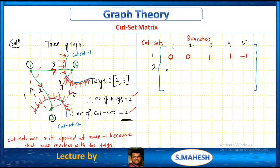Cut set 2, branch 1 — branch 1 is away, so minus 1. Branch 2, cut set 2 — it is towards, so plus 1. Branch 3 — no connection, so 0. Branch 4 — away, so minus 1. Branch 5 — towards, so plus 1.